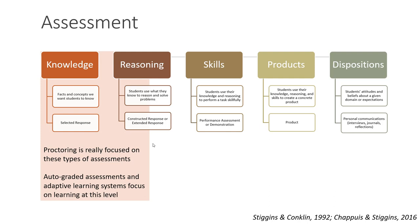A quick note on proctoring: proctoring needs to be situated appropriately. The types of tasks that get proctored are tests that largely measure knowledge and, to some extent, reasoning. Those may be auto-graded assessments or used in adaptive learning systems, but keep in mind they largely operate at the knowledge and reasoning level. When you ask how to know if a student can truly apply knowledge, that requires a whole different method of assessment.